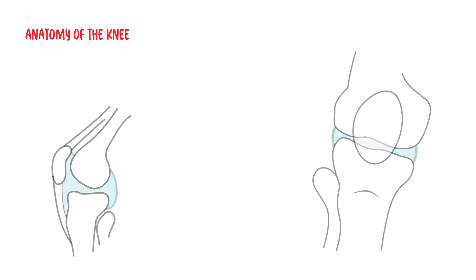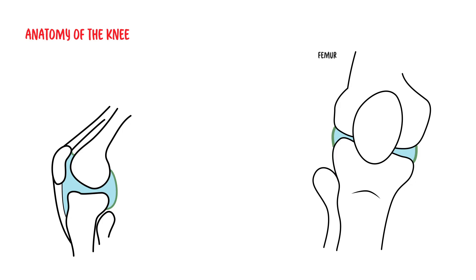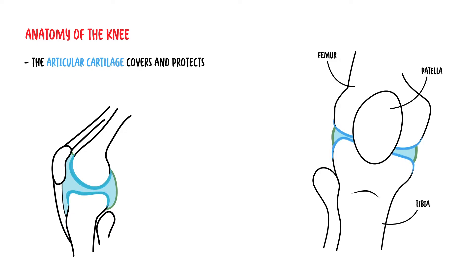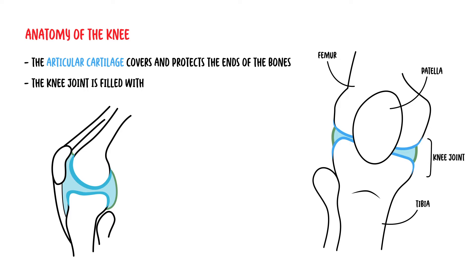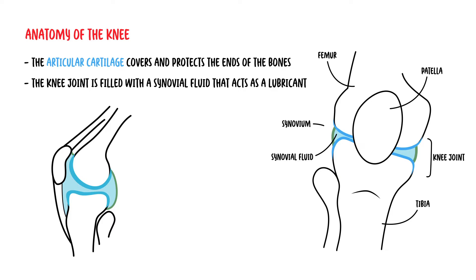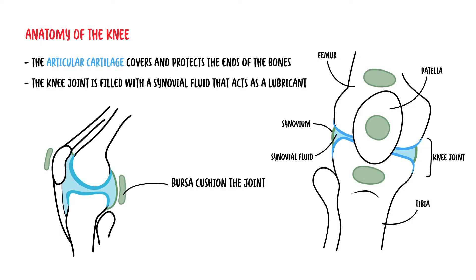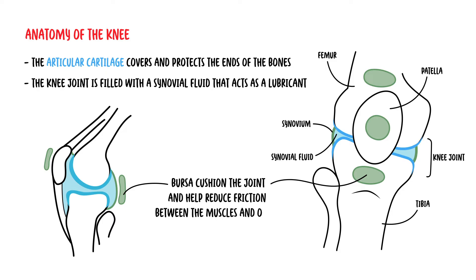The knee joint is made up of the lower ends of the femur, upper end of the tibia, and the patella. The articular cartilage covers and protects the ends of the bones where they meet to form a joint. The knee joint is filled with a clear fluid called synovial fluid that acts as a lubricant to help reduce friction between the joint. Small fluid-filled sacs, called bursa, cushion the joint and help reduce friction between the muscles and the surrounding structures.